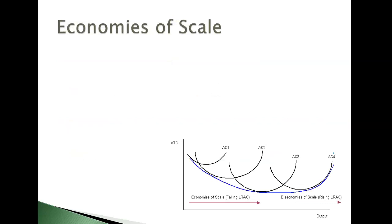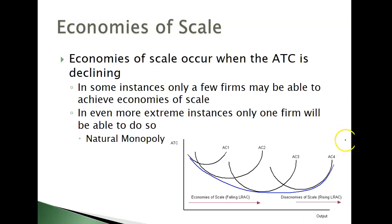Why do monopolies exist? A big portion is the economies of scale concept. The economies of scale is the idea that the LRATC is downward sloping — as you increase your fixed resources, you get a lower average total cost. If there's only one firm that can do this instead of a whole bunch, they're going to emerge. This is more typically true with natural monopolies. That's one reason somebody can become a monopoly — they're just more efficient with their fixed resources.